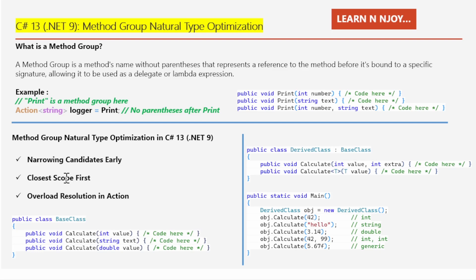So with C# 13's new method group natural type optimization, the compiler became smarter now. Why am I saying this? Because it does three things for identifying the correct method to invoke.